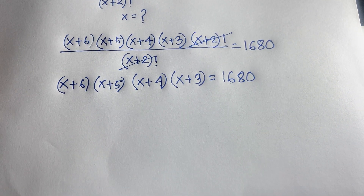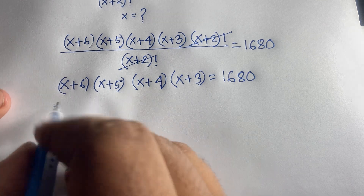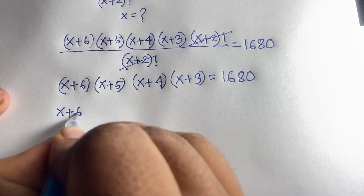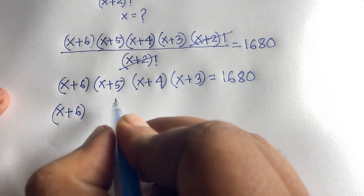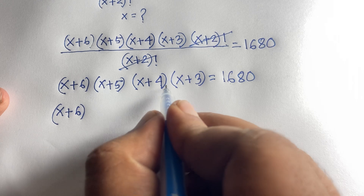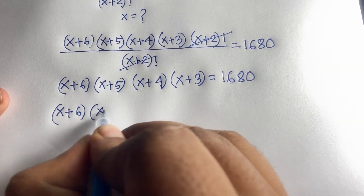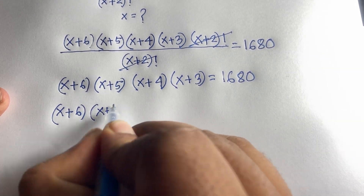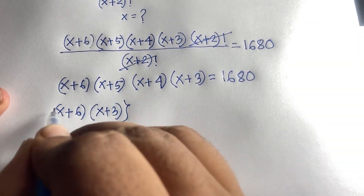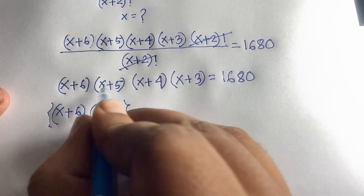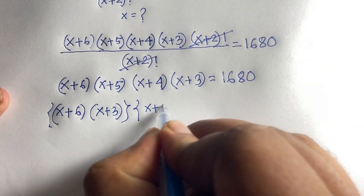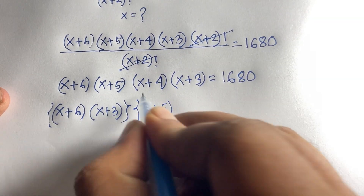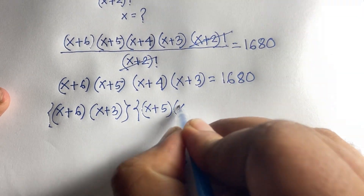We rearrange the factors by pairing: (x+6)(x+3) and (x+5)(x+4), so we have (x+6)(x+3) · (x+5)(x+4) = 1680.